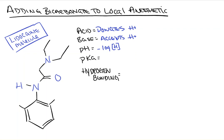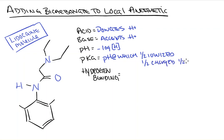The pKa is the pH, or the concentration of hydrogen ions, in a solution at which the number of charged molecules is the same as the number of uncharged molecules. In scientific terms, it's the pH at which we are half ionized — meaning half of our molecules are charged and one half uncharged.